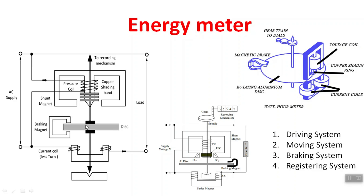The two magnetic fields from the pressure coil and the current coil oppose each other and create a combined rotating field on the aluminum disk. The copper shading bars help convert the magnetic field of the pressure coil by 90 degrees. These adjustable copper bars shift the magnetic field by 90 degrees, creating the phase difference needed to rotate the disk.